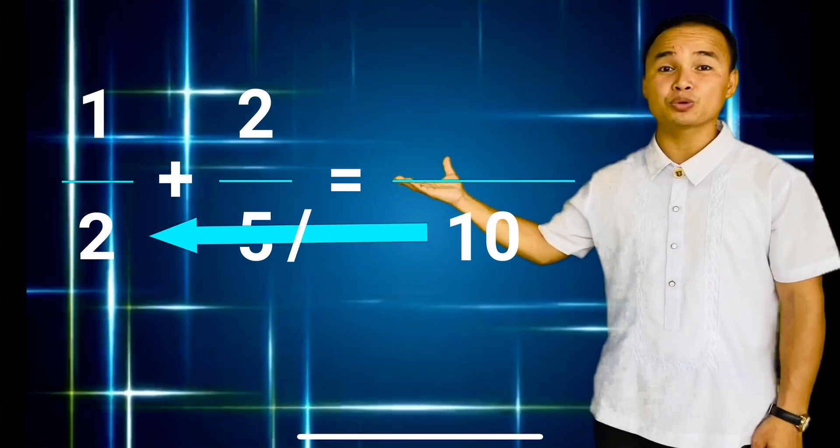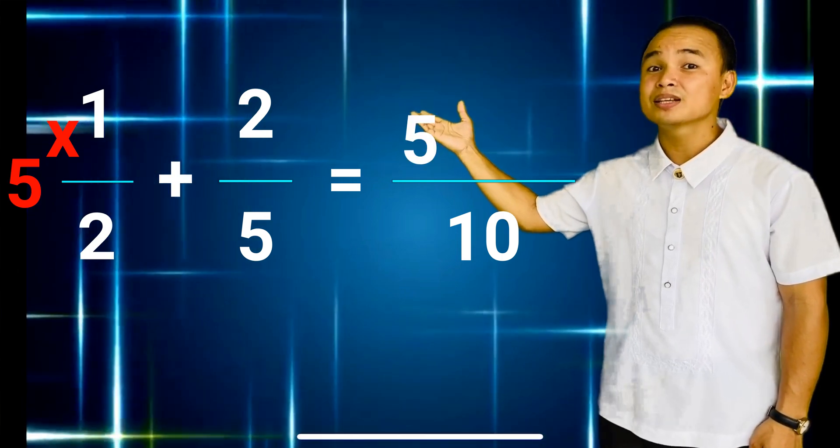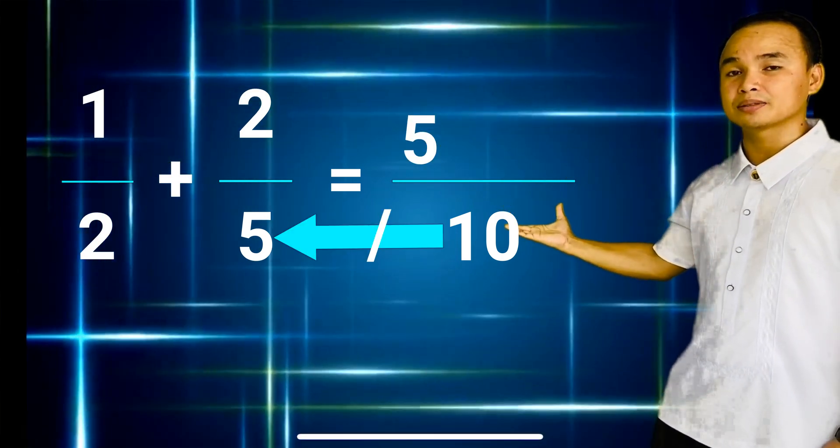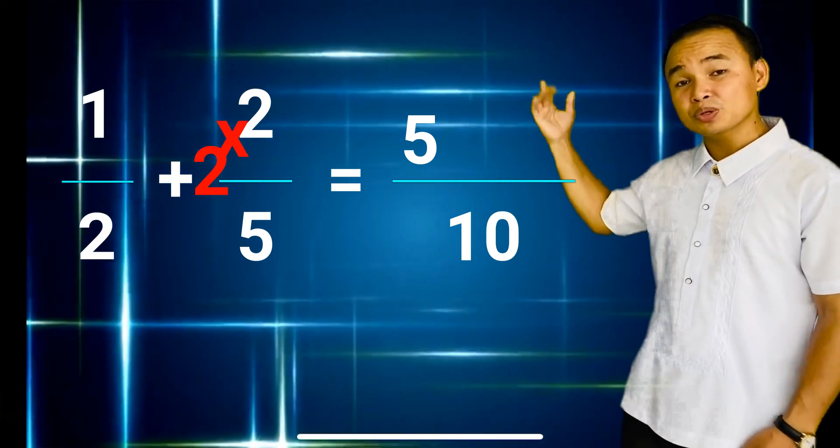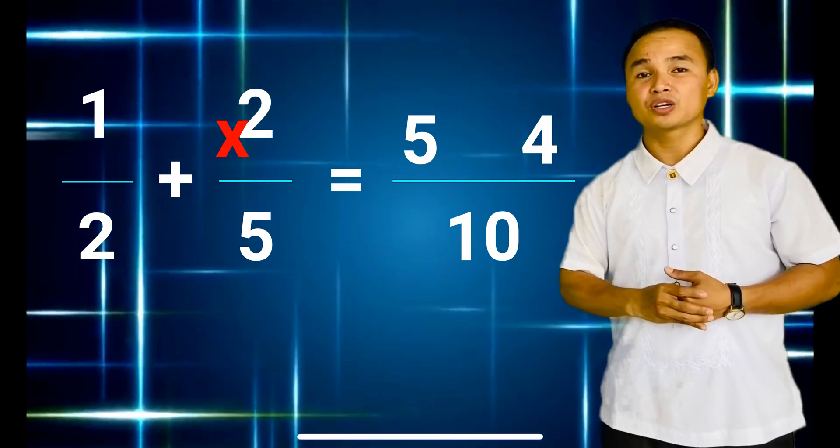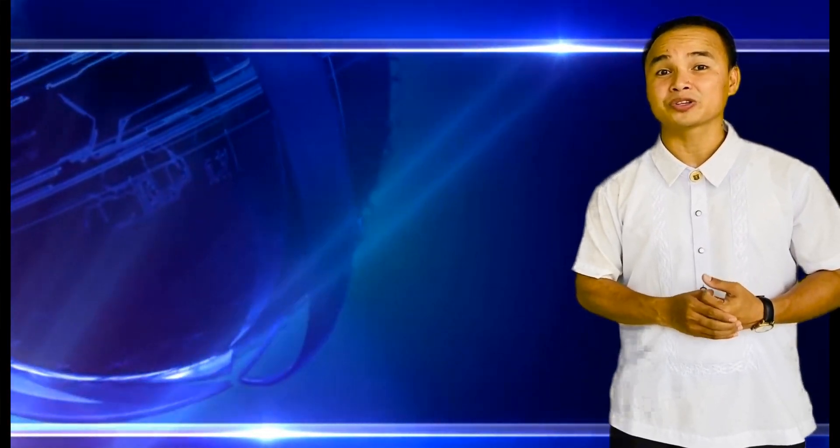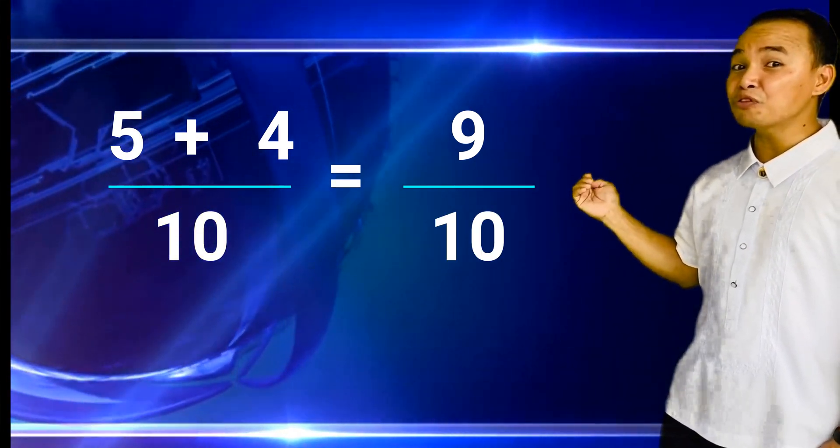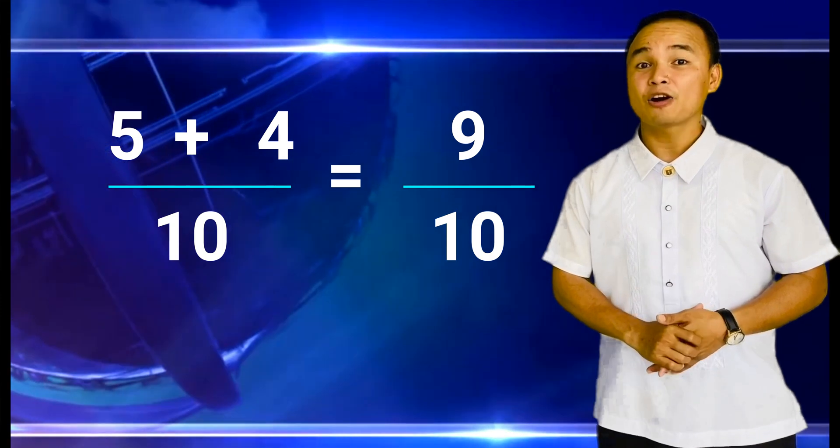So 10 divided by 2 is equal to 5. Times 1 is still 5. So we get 5 over 10. 10 divided by 5 is 2. Multiply by 2 is equal to 4. So we get 4 over 10. So we are down to the next step which is to add the numerators. 5 plus 4 is equal to 9. So we get the answer 9 over 10.